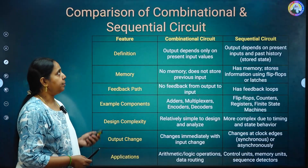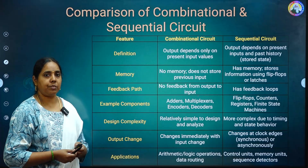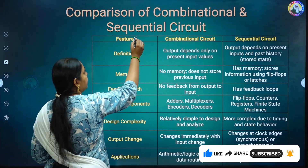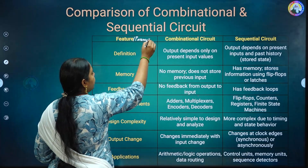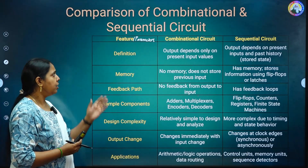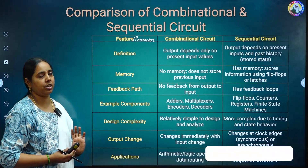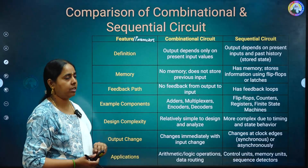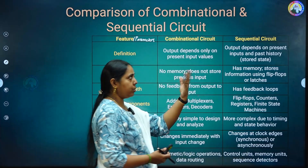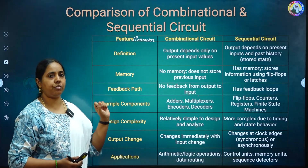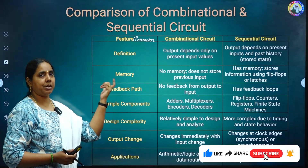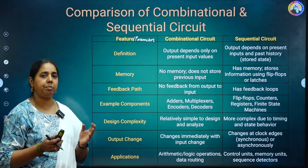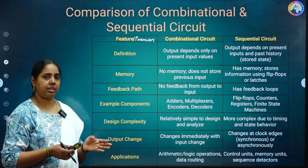Now let's see the differences between combinational and sequential circuits using various features or parameters. First, definition: in a combinational circuit the output depends only on present input values, whereas in a sequential circuit the output depends on present inputs and also past history values. Second, memory: in a combinational circuit no memory is required because we depend only on present inputs and do not store any previous input.